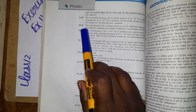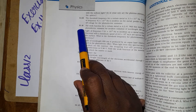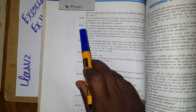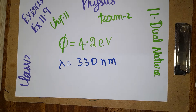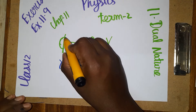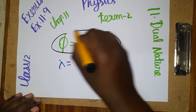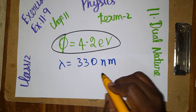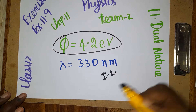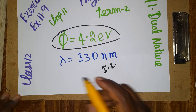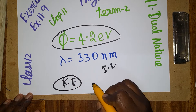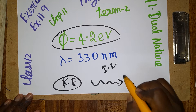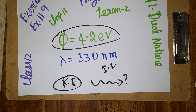Hello students, today we are going to discuss Class 12 Physics NCERT Exercise Problem, Chapter 11, 9th problem. The question is a Class 12 Term 2 question. The work function and wavelength of incident light are given, and we need to determine whether the electron will be emitted or not.